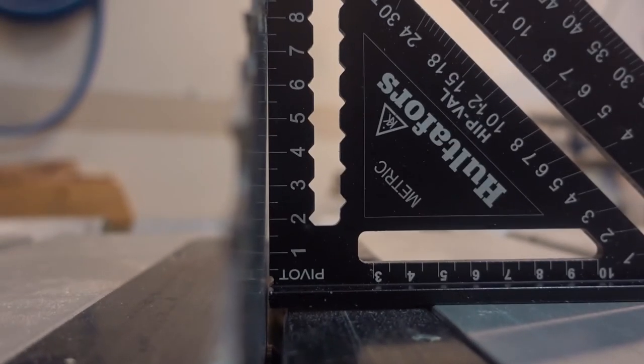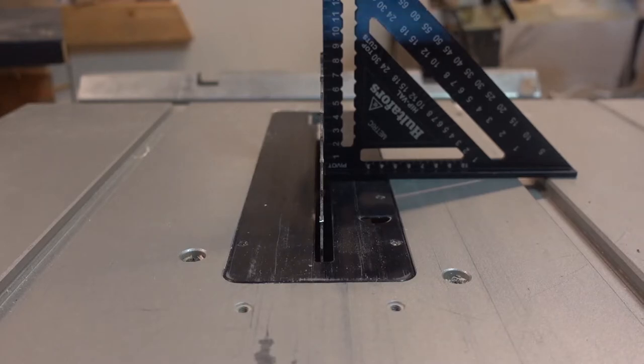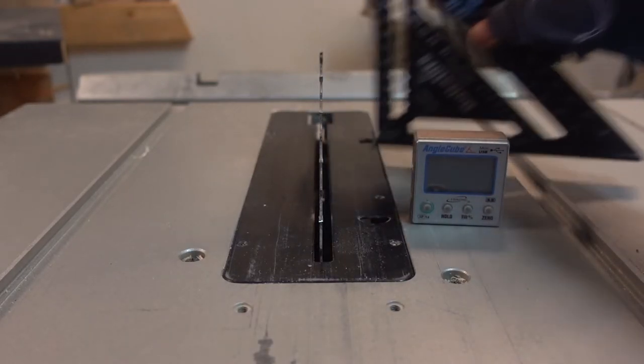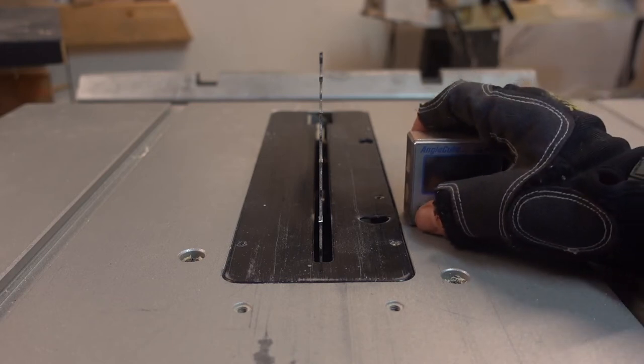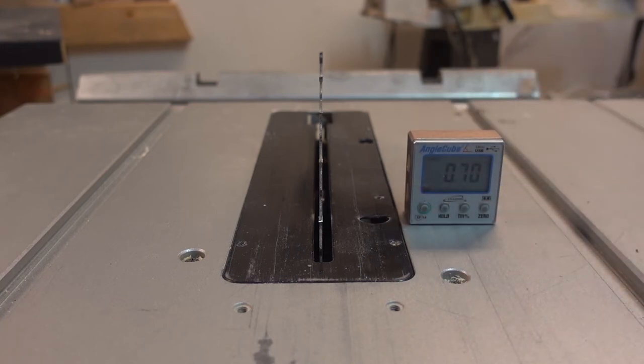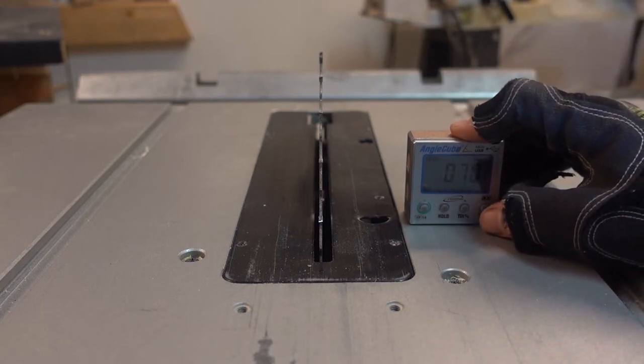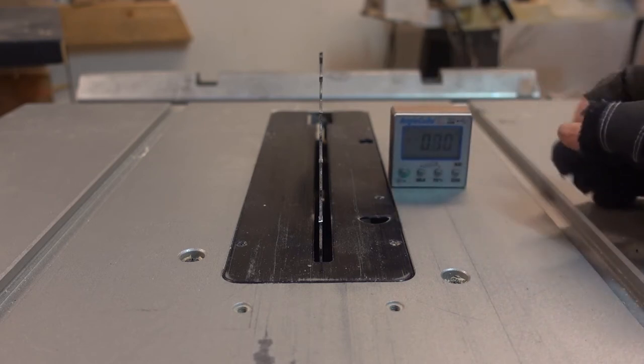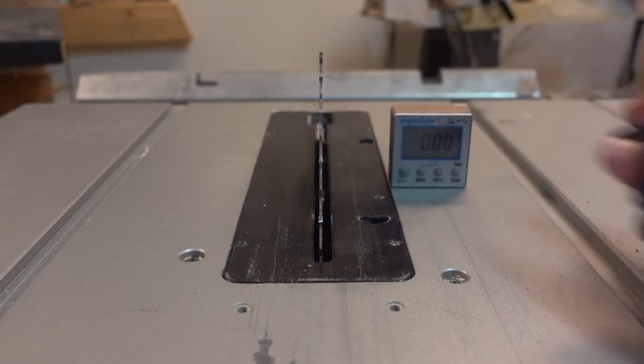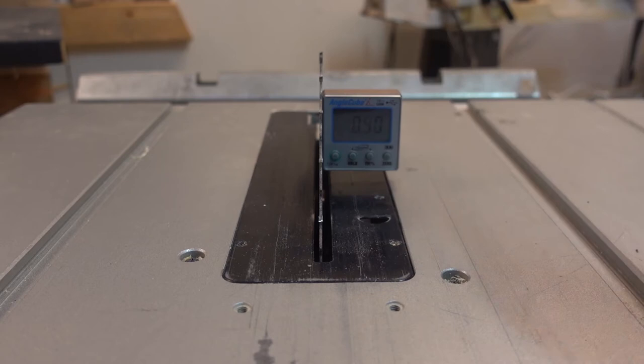To fine adjust the saw blade angle I like to use one of these. This is an angle cube. Fairly inexpensive, works great for many things. I turn it on and set it on the tabletop. As you can see the saw is not perfectly leveled. So I press the zero button on the right. Now the angle cube is calibrated to the table of the saw.